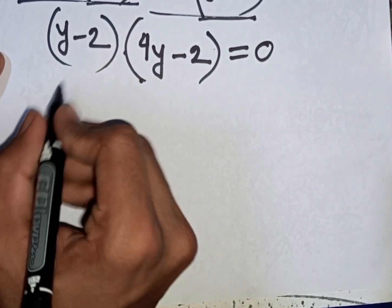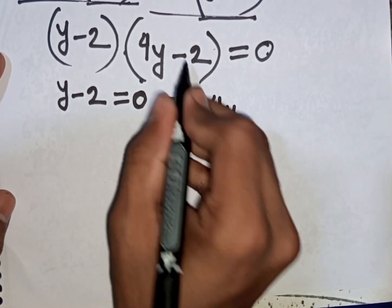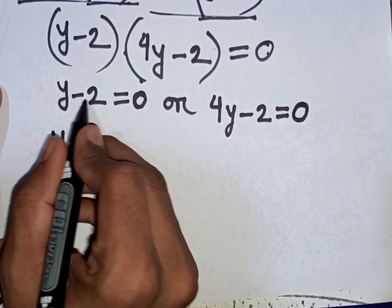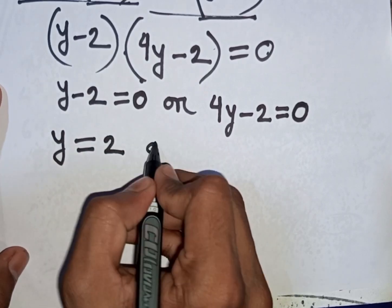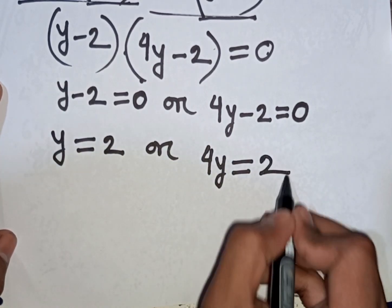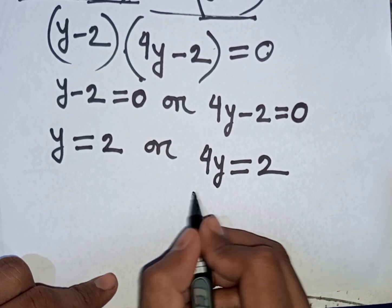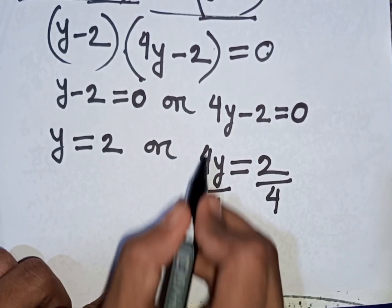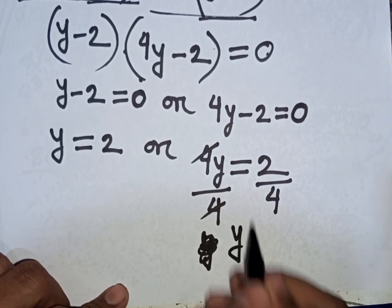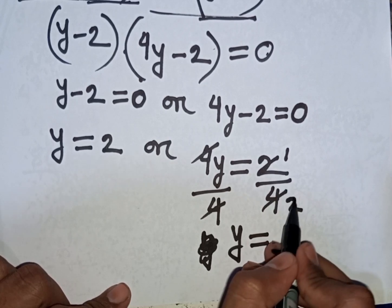From the factored form, y minus 2 equals 0 gives y equals 2. Or 4y minus 2 equals 0, so 4y equals 2. Dividing both sides by 4, and simplifying 2 over 4 by 2, gives y equals 1 over 2.